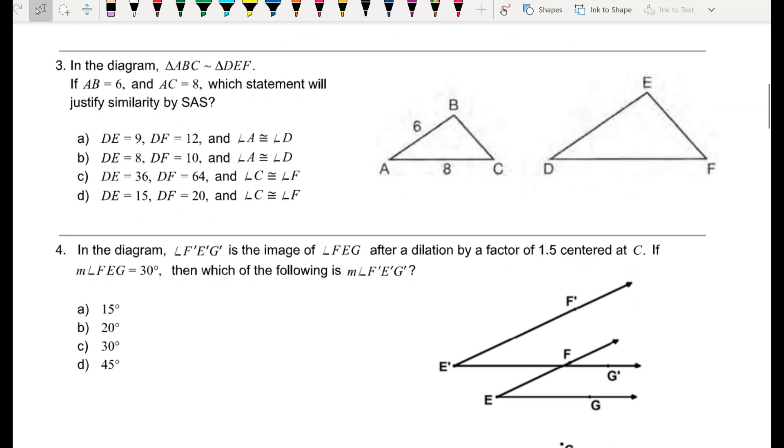Number 3. In the diagram, triangle ABC is similar to triangle DEF. That means the angles are the same and the sides are in proportion. If AB equals 6 and AC equals 8, which statement will justify similarity by side-angle-side? Well, for side-angle-side, I need to prove that two pairs of sides are in proportion, and the angle between those sides is congruent.